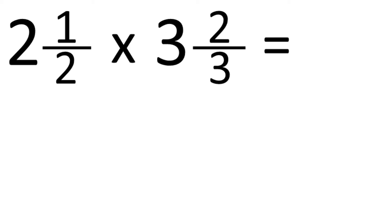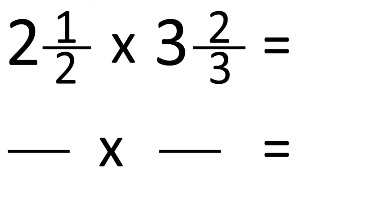If mixed numerals are involved, it requires just a bit more work. First, you convert them to improper fractions. So taking this example, 2 and a half times 3 and 2 thirds — firstly I'll convert 2 and a half to an improper fraction. 2 times 2 is 4, plus 1 is 5, so it becomes 5 over 2.